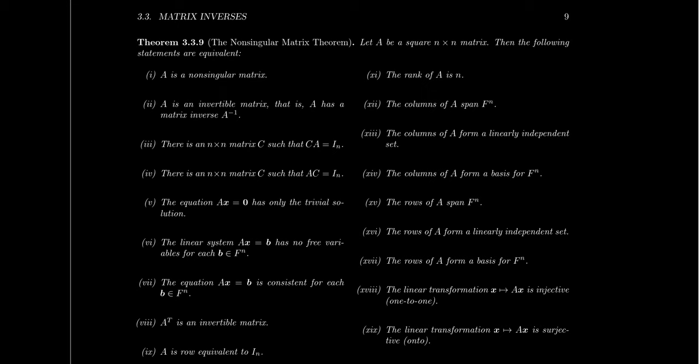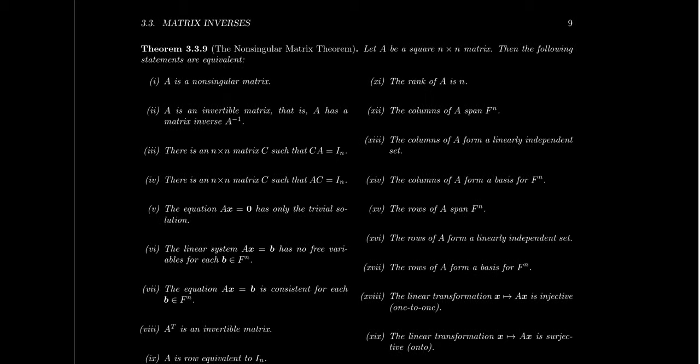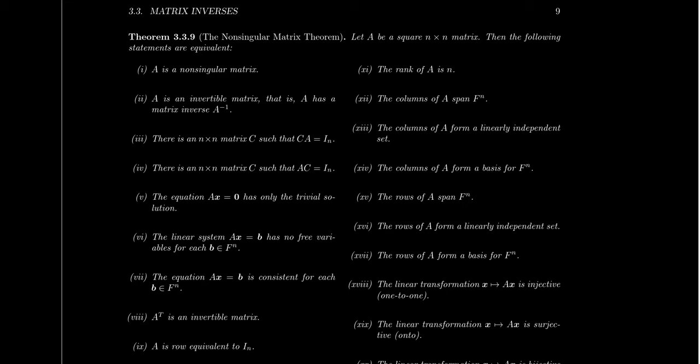Let's talk about a few of the highlights of this list. When we say that two things are logically equivalent, we mean either both statements are true or both statements are false. When you look at this list of 20 items — and I'll warn you, this list is not comprehensive, these are just some of the items equivalent to being a non-singular matrix — when one of these statements is true, then all 20 are true. And if one statement is false, then all 20 are going to be false as well.